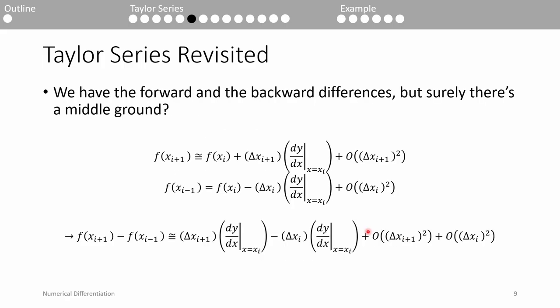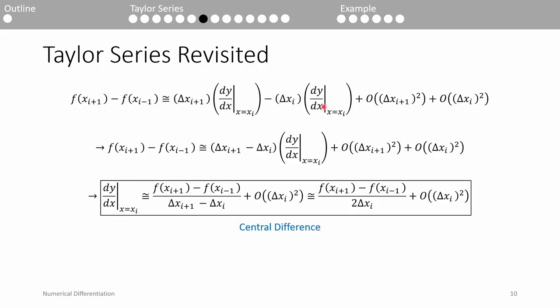It turns out there's a third way to approximate the first derivative. The forward difference uses the current point and the point ahead of it. The backward difference uses the current point and the point behind it. It would be nice to form a derivative estimate which uses both the preceding and succeeding point. We can start by subtracting the backward difference equation from the forward difference equation. When we do so, we end up with a bunch of messy algebraic terms. After some rearrangements, we arrive at the central difference formula.